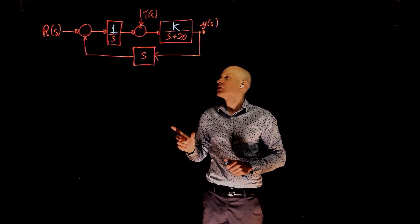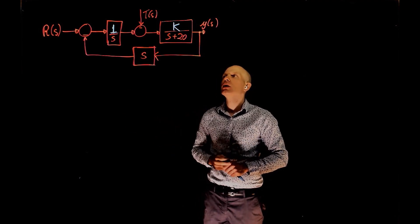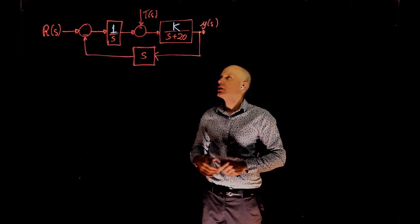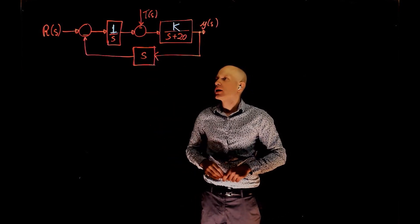We are interested in two things in this example. The first one is the time constant of the closed loop system, and the second one is the settling time to a step input of T. Let's just start with the time constant.